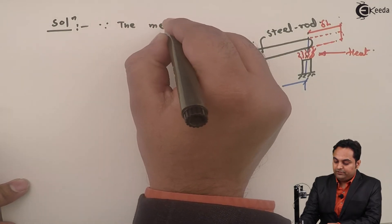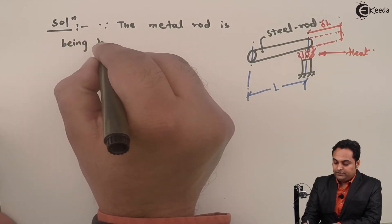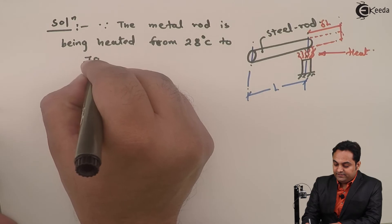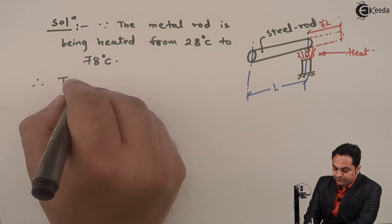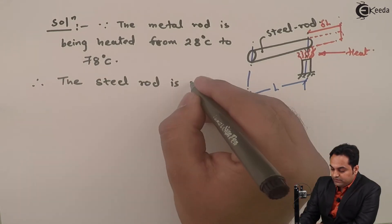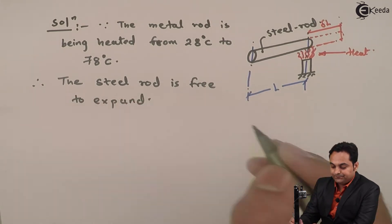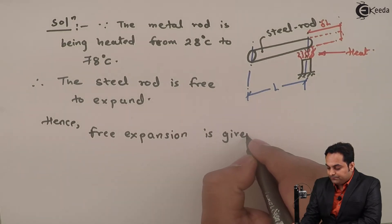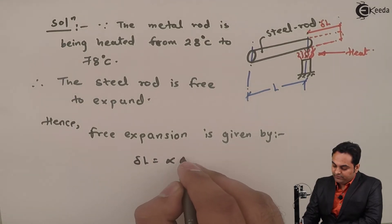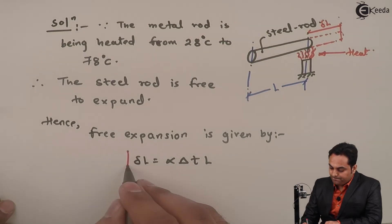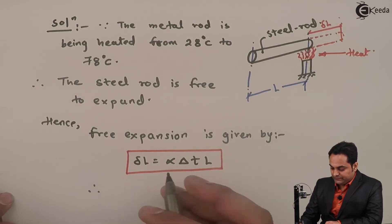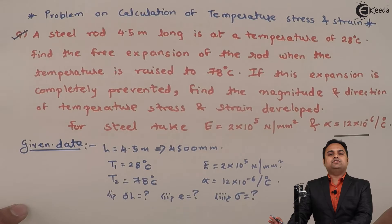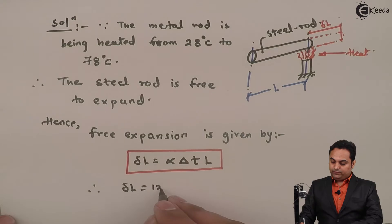Since the steel rod is being heated from 28 degrees Celsius to 78 degrees Celsius, the steel rod is free to expand. The free expansion is given by the formula: delta L equals alpha into delta T into L. Alpha is 12 into 10 raised to minus 6 per degree Celsius, which is the coefficient of thermal expansion for steel.